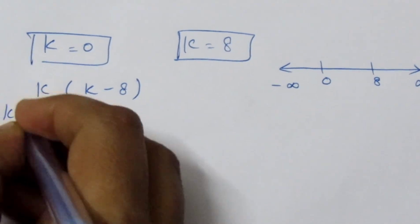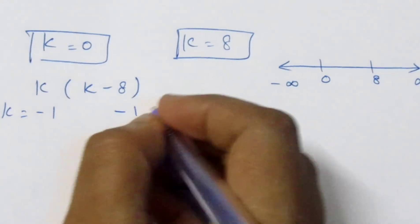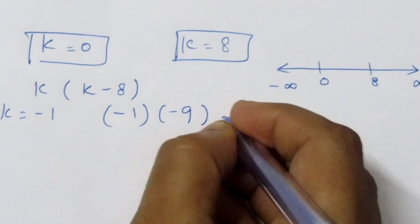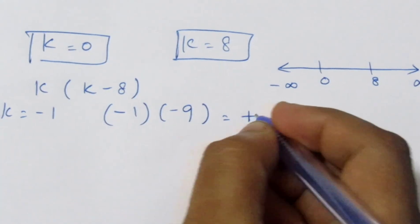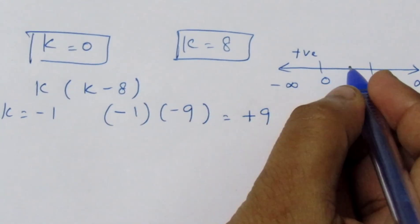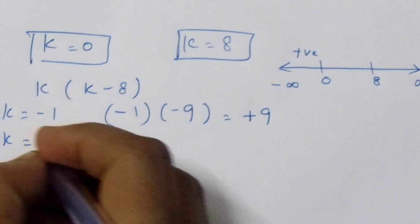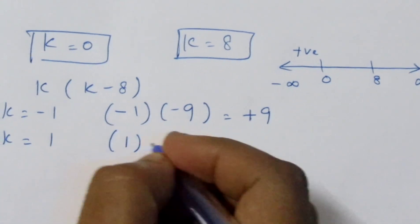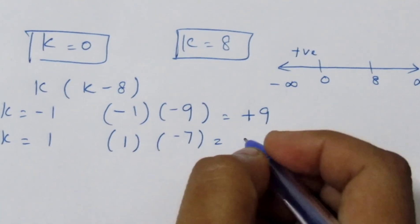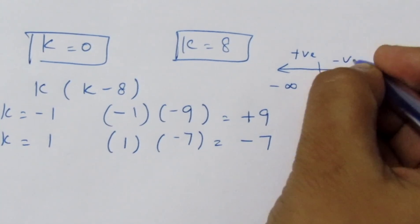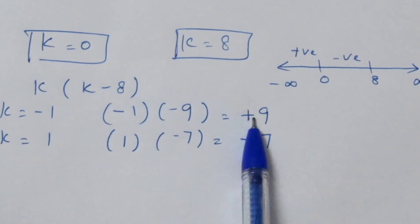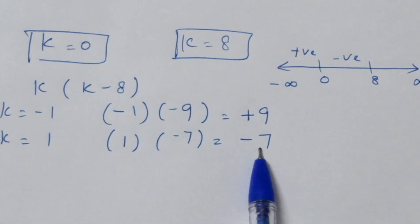We substitute test values into k(k minus 8). Let k equal minus 1: we get minus 1 times (minus 1 minus 8) equals minus 1 times minus 9 equals positive 9 — this is positive. Let k equal 1: we get 1 times (1 minus 8) equals minus 7 — this is negative.